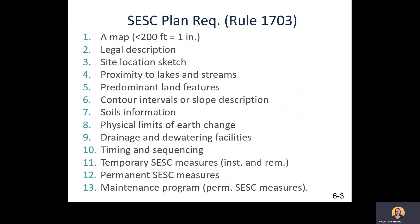No disturbance should take place outside of the delineated limits. A description and location of all existing and proposed on-site drainage and dewatering facilities must be included. The timing and sequence of construction activities must be specified — when will temporary measures be installed, when will grading begin, and how will phasing and staging occur throughout the project? The plan must also include placement of temporary SCSC measures with installation instructions, placement of permanent SCSC measures with installation instructions, and a maintenance program for permanent SCSC measures, such as who is tasked with maintaining a check dam or cleaning a retention or detention pond.